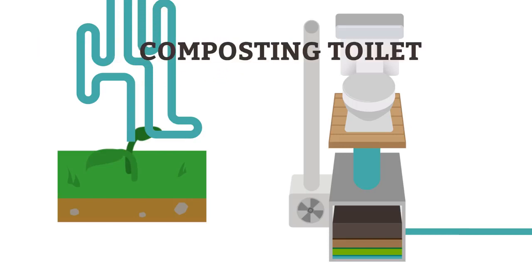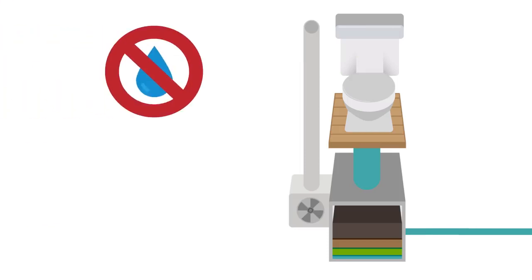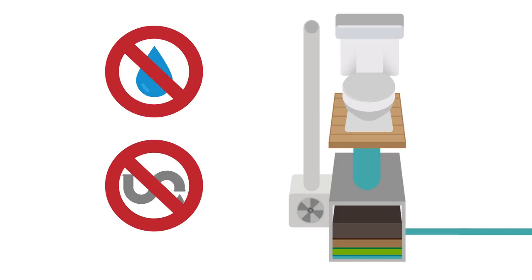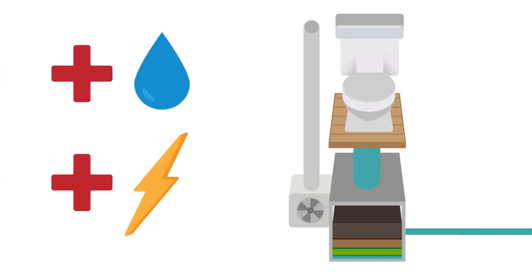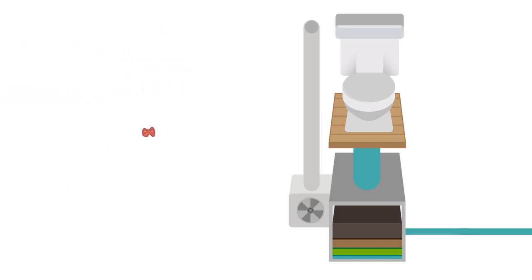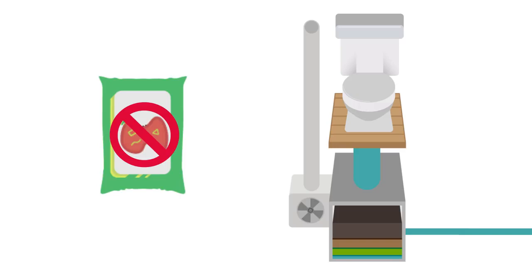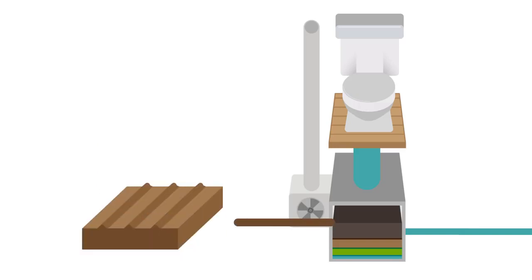A composting toilet does just this. Currently they're used where there is no water supply or sewage disposal, but if they replaced the flush system worldwide, huge amounts of energy and water would be saved. They work with aerobic bacteria that need oxygen, and you end up with fertilizer that is pathogen-free and ready to be returned to the soil.